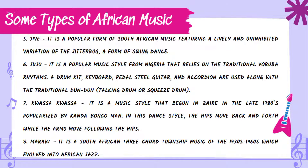Fifth is Jive — a popular form of South African music featuring a lively and uninhibited variation of the jitterbug, a form of swing dance. Sixth is Juju — a popular music style from Nigeria relying on traditional Yoruba rhythms, using a drum kit, keyboard, pedal steel guitar, and accordion along with the traditional dundun or talking drum. Seventh is Kwasa-Kwasa — a music style that began in Zaire in the late 1980s, popularized by Kanda Bongoman, where the hips move back and forth while the arms follow. Eighth is Marabi — a South African three-chord township music of the 1930s to 1960s which evolved into African jazz.